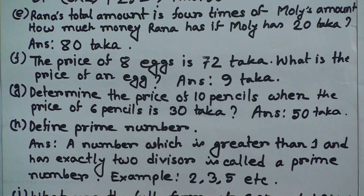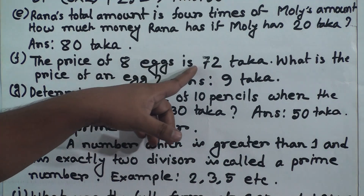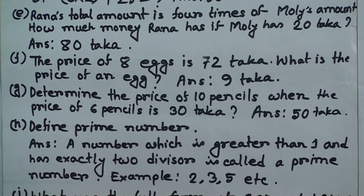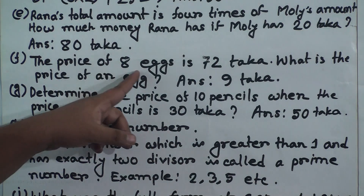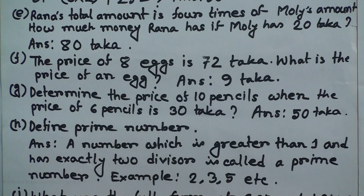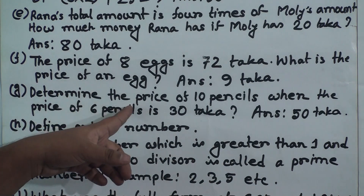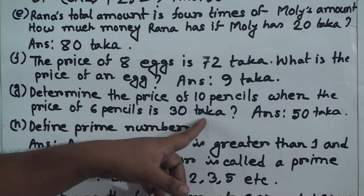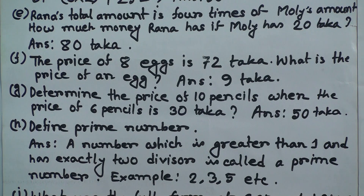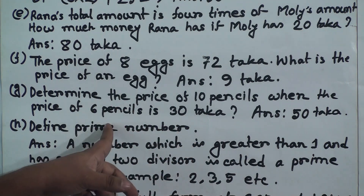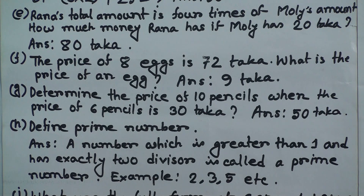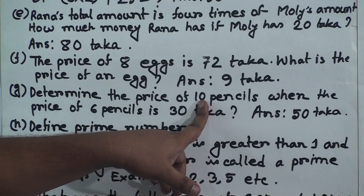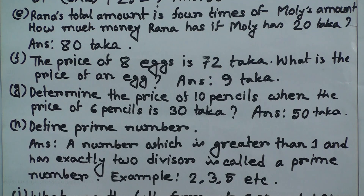(f) The price of 8 eggs is 72 taka. What is the price of one egg? We divide 72 by 8 and get 9. So 9 taka is the price of one egg. (g) Determine the price of 10 pencils when the price of 6 pencils is 30 taka. The price of one pencil is 30 ÷ 6 = 5 taka. Then 5 × 10 = 50. So 50 taka is the price of 10 pencils.